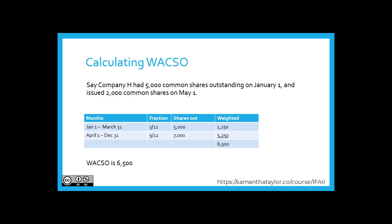Say Company H had 5,000 common shares outstanding on January 1st and issued 2,000 common shares on May 1st. From January 1st to March 31st, that represents three-twelfths of the year, there were 5,000 shares outstanding. The weighted average for this three-month period is three-twelfths times 5,000, which equals 1,250.